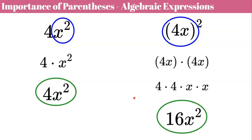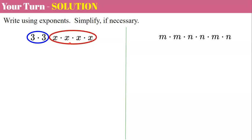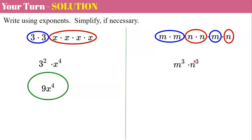Watch for parentheses — if there aren't any, recognize it, and consider circling on your papers. Now it's your turn: write these using exponents and simplify if necessary. For the first one, we have two 3s and four x's, so we write 3 squared times x to the fourth. 3 squared is 9, giving us 9x to the fourth. For the next one, we have three m's and three n's, so the answer is m cubed times n cubed, written as m³n³.